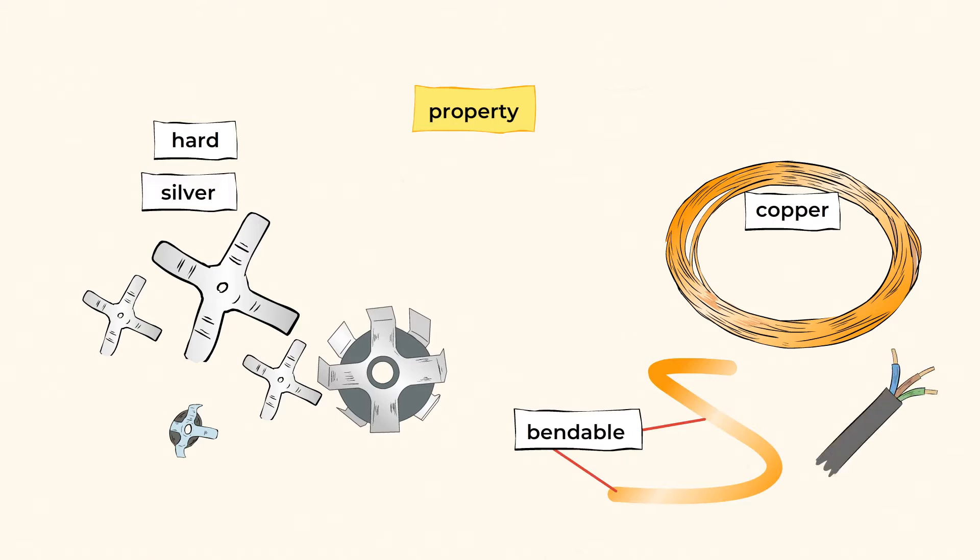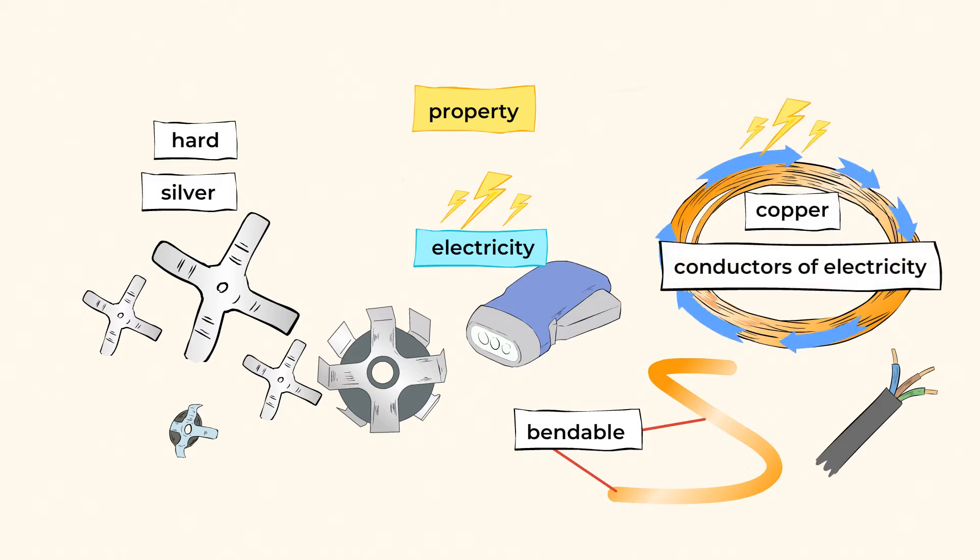I think this must be some kind of a wire. And I know that a flashlight uses electricity, so I bet the wires are good conductors of electricity. And that means that electricity can flow through it as well.